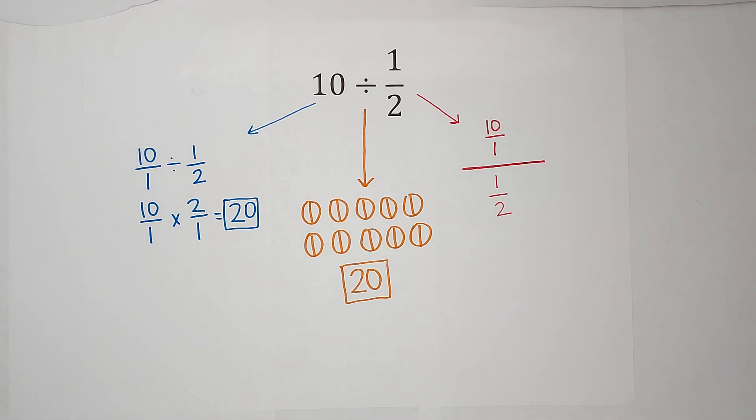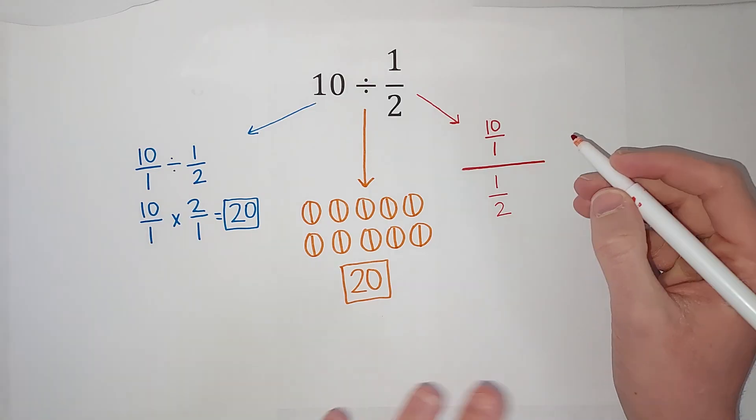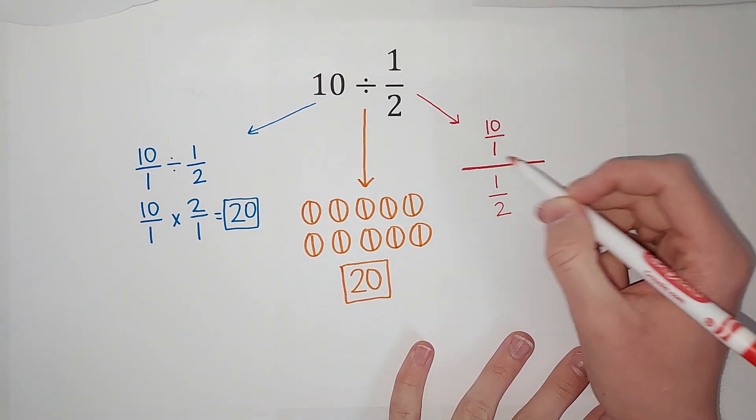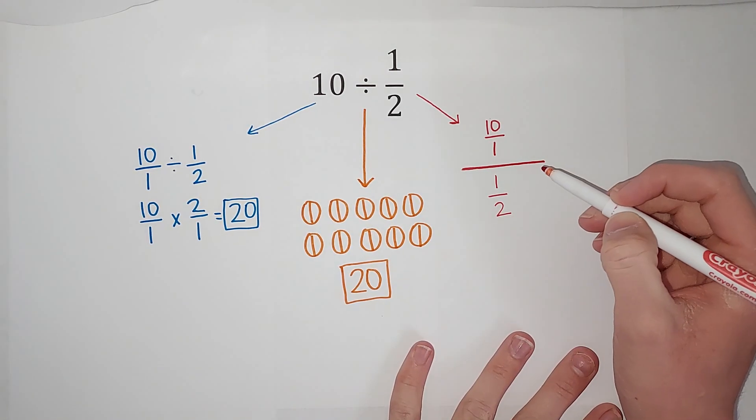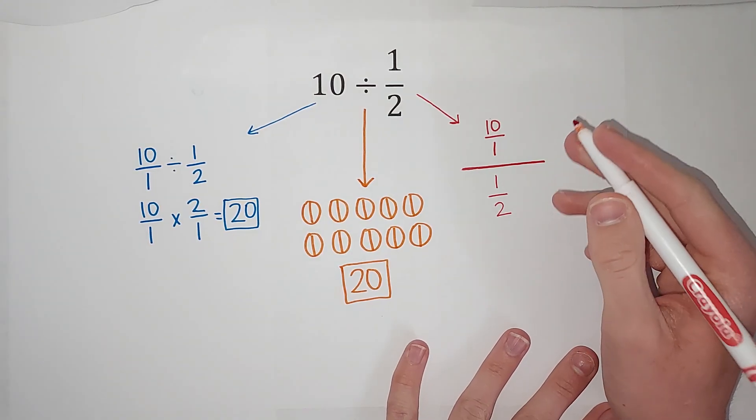But if I wanted to simplify this, if we can get rid of our denominator, we like to do that, right? So to get rid of this, I would multiply by 2 over 1, right? Because they would cancel each other out, just leave me with a 1 on the bottom.